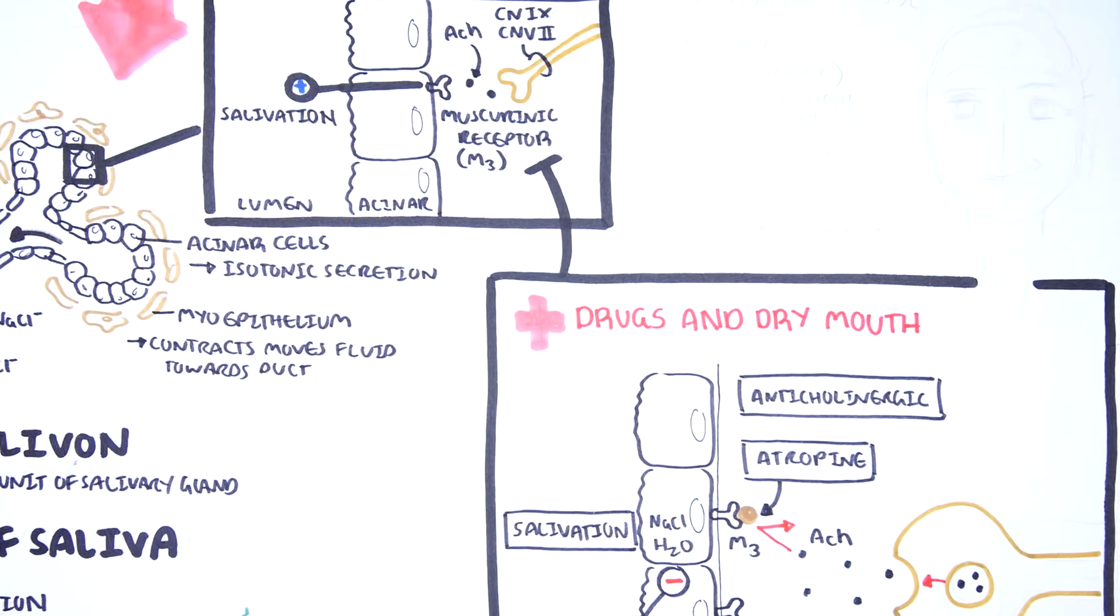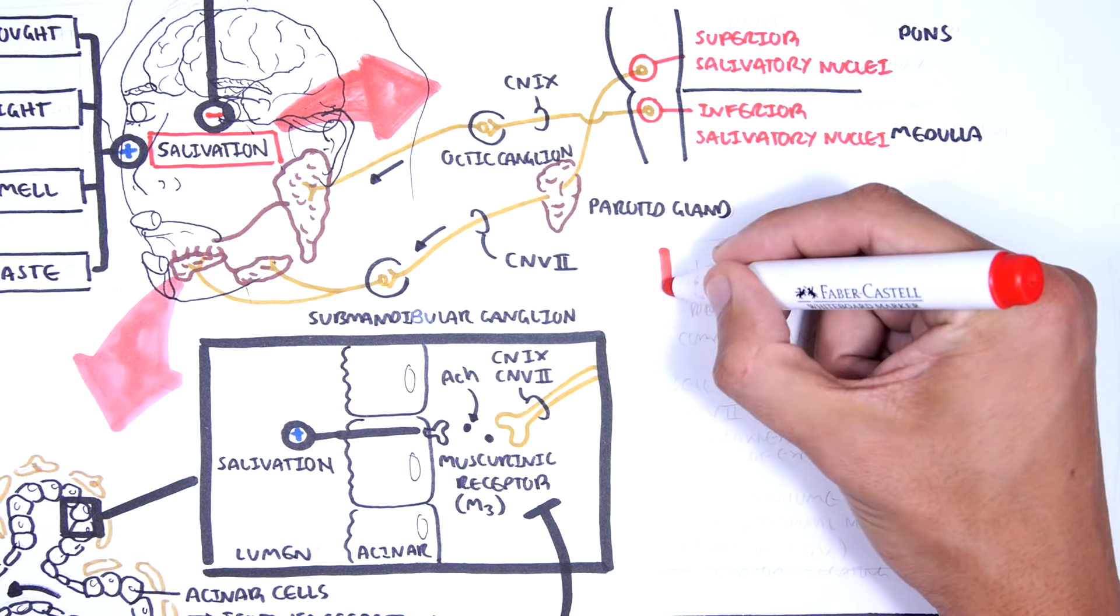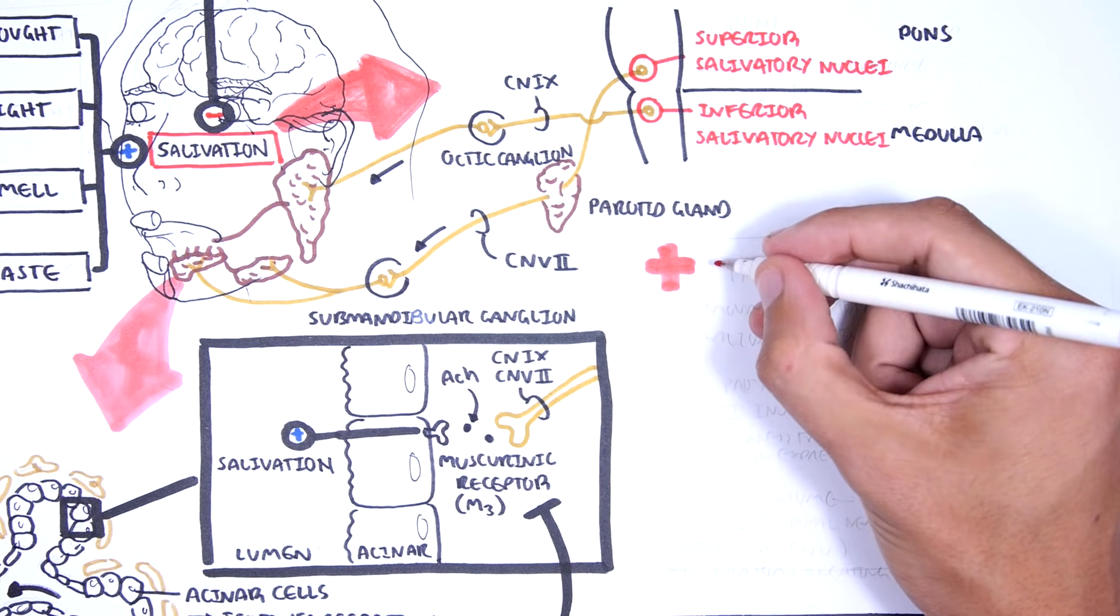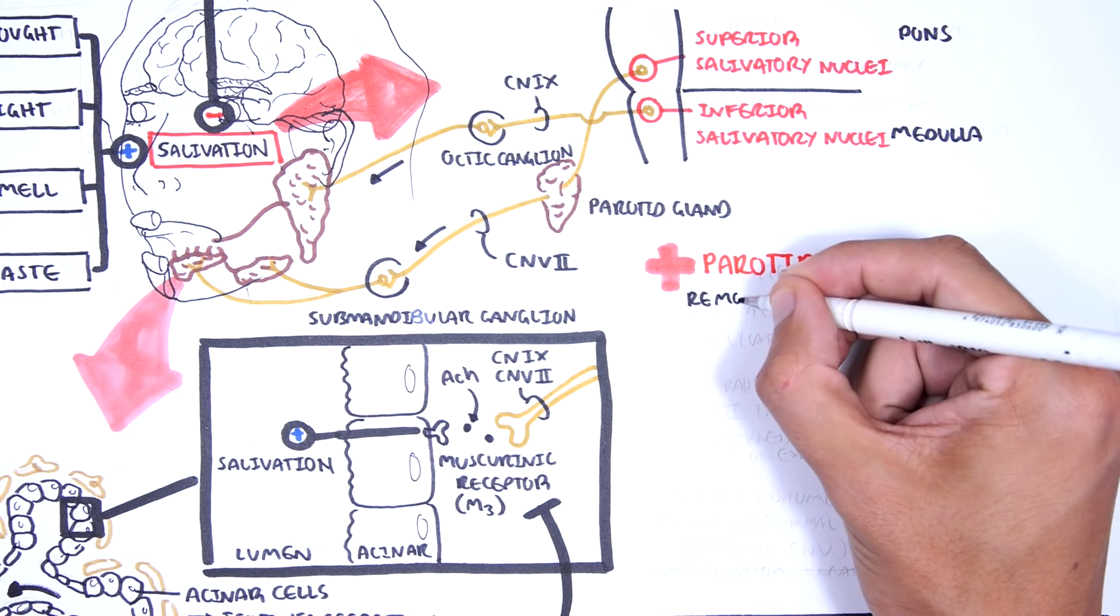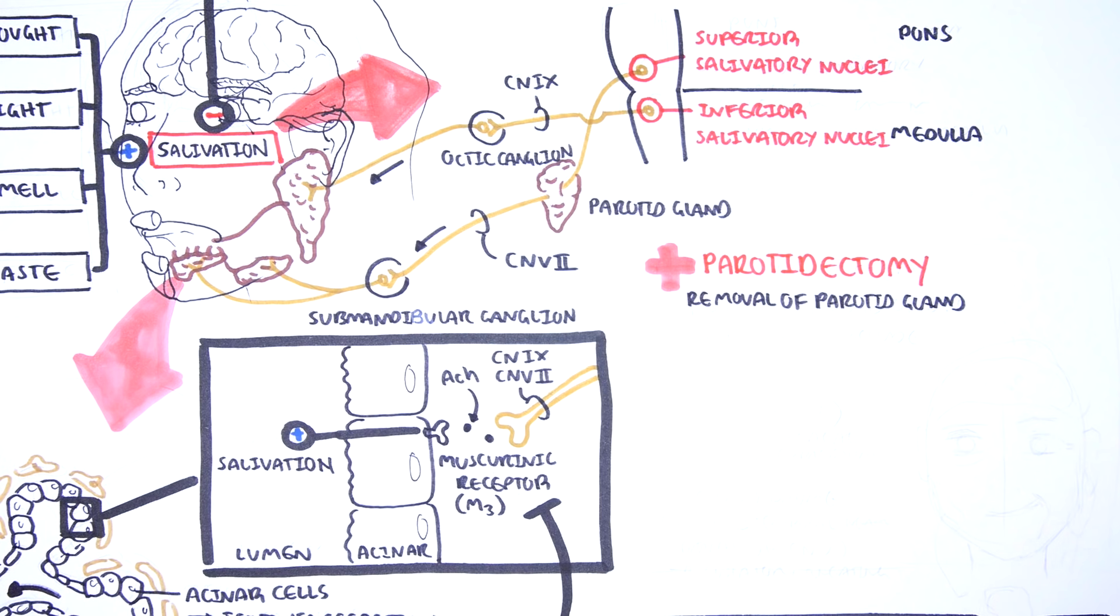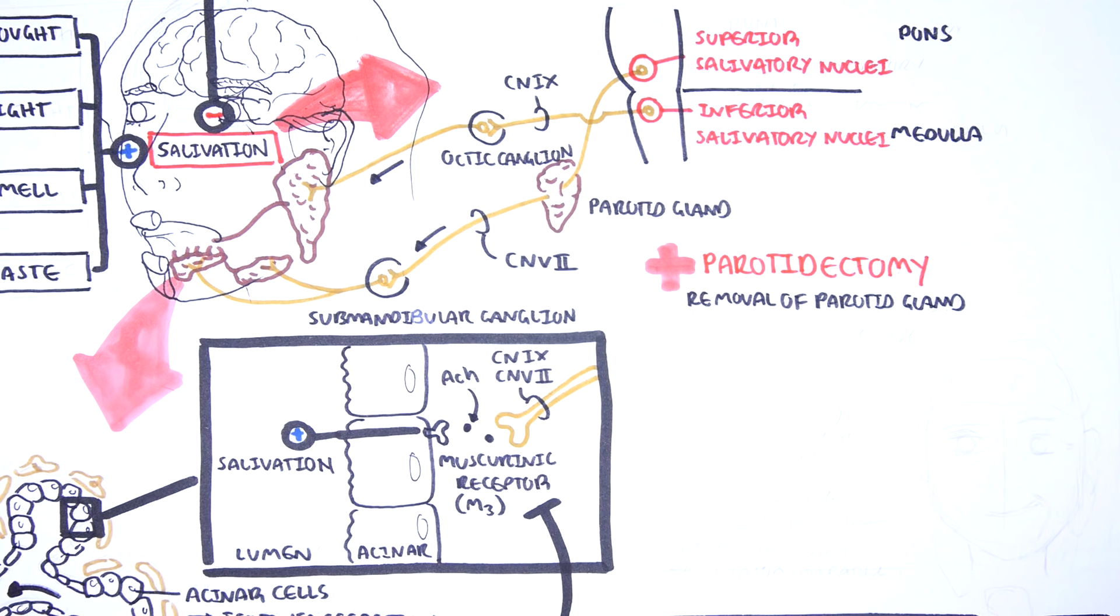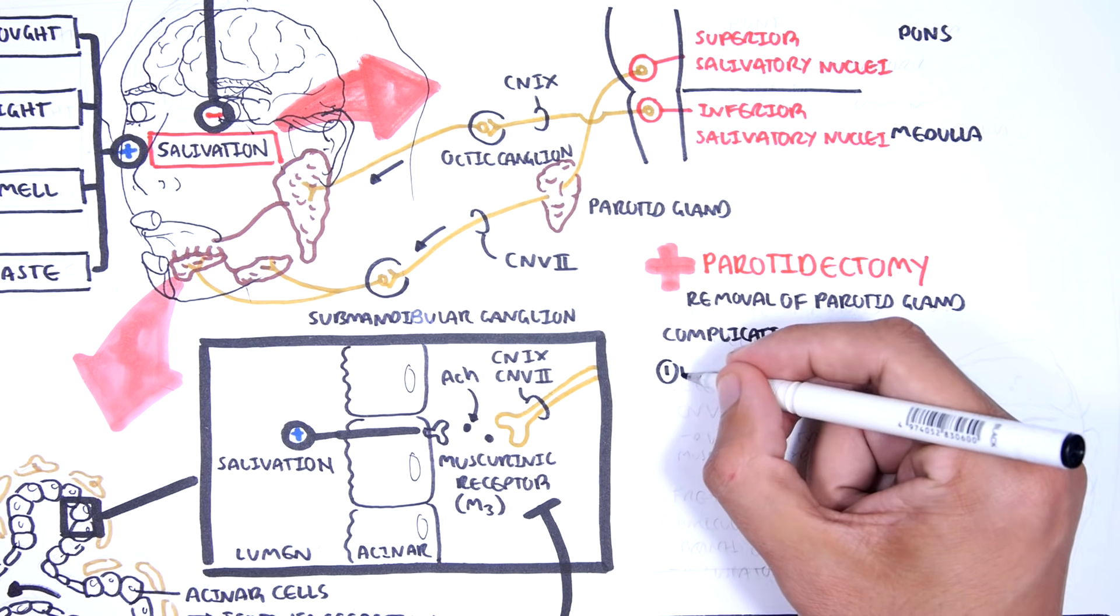The parotid gland is an important gland because many conditions can cause it to become inflamed, a term called parotitis. Also, parotid tumors can occur requiring what's called a parotidectomy, which is the removal of the parotid gland. Normally parotidectomies come with no complications, but there are some rare complications, including what's called Bell's palsy.